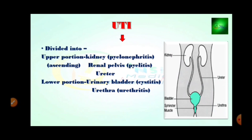UTI is divided into two parts: the upper portion and the lower portion. The upper portion involves the kidney, including the renal pelvis and ureter — infection of the renal pelvis is called pyelitis, and upper kidney infection is called pyelonephritis, known as ascending infection. The lower portion involves the urinary bladder, causing cystitis, and the urethra, causing urethritis. As seen in the picture, kidneys are present with the ureter on both sides, the bladder, sphincter muscle, and urethra.